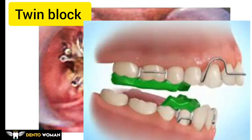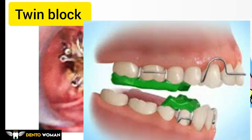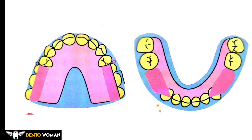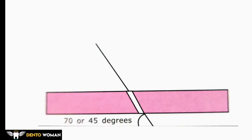This is the image of the twin block appliance. Here you can see the upper block and the lower block from the occlusal view. The upper appliance consists of a bite block that covers the lingual cusp of the upper posterior teeth, extending anteriorly till the mesial ridge of the upper second premolar or primary second molar whichever is present. The lower bite block extends distally up to the distal marginal ridge of the second premolar. The angle of inclination between the blocks should be 70 degrees, preferably for horizontal advancement.